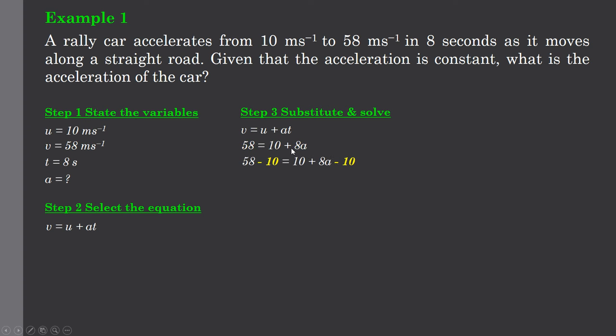We're trying to work out what a is. So let's take 10 from both sides. That will leave us with 48 equals 8a. And simply now to get a by itself, it's currently multiplied by 8, we'll need to divide both sides by 8. So a is 48 divided by 8. And in this system we now know acceleration of this car is 6 meters per second per second, commonly referred to as 6 meters per second squared. That's example number one.